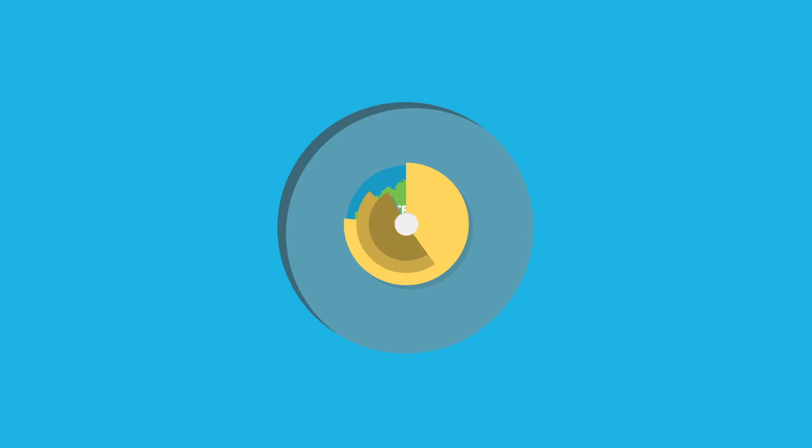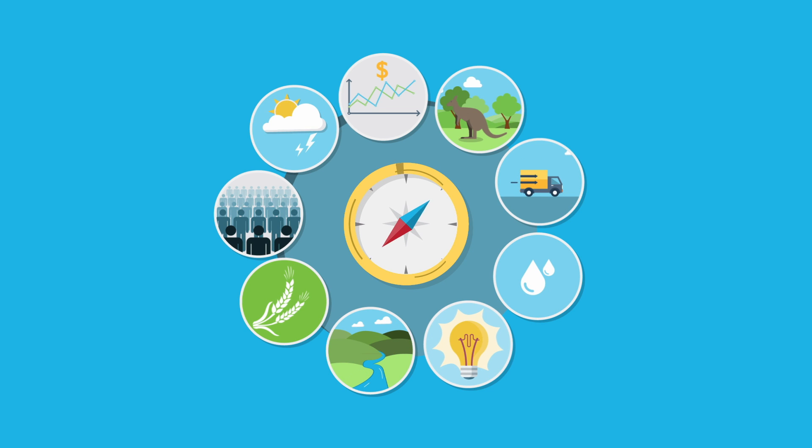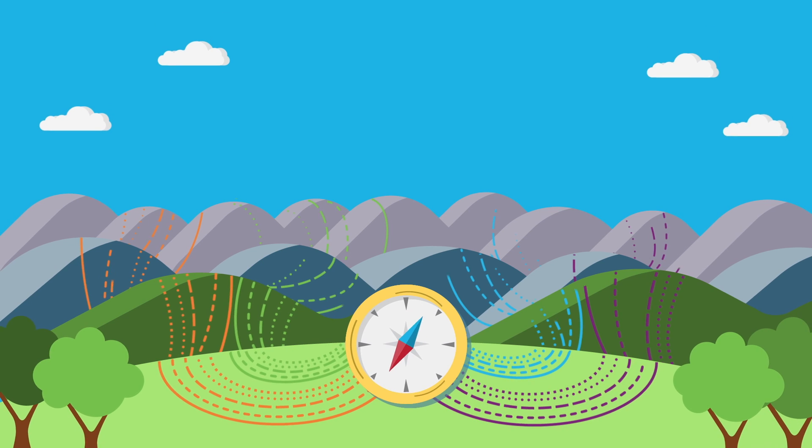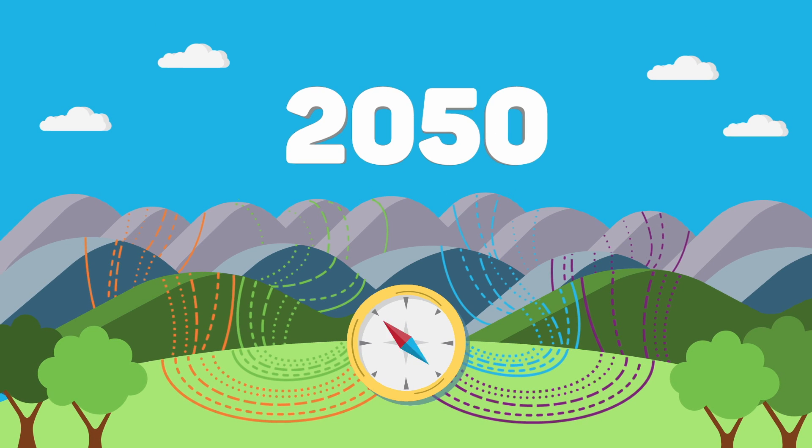The National Outlook charts key global and uniquely Australian drivers that shape 20 possible pathways that Australians may need to navigate over the next 35 years.